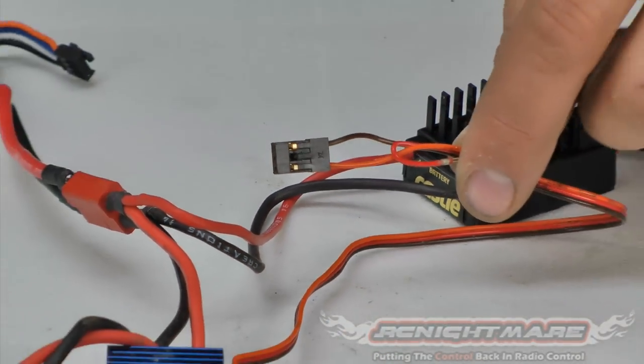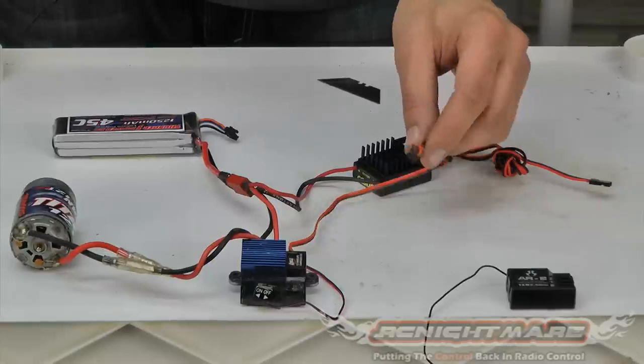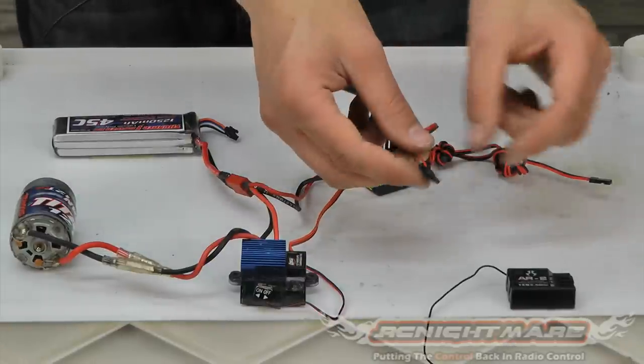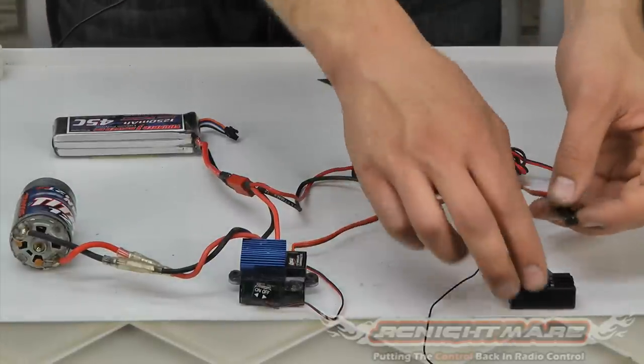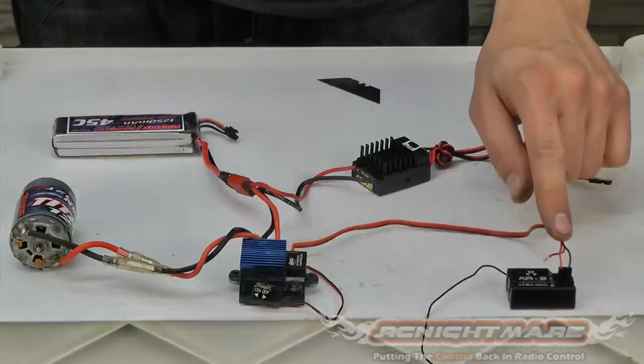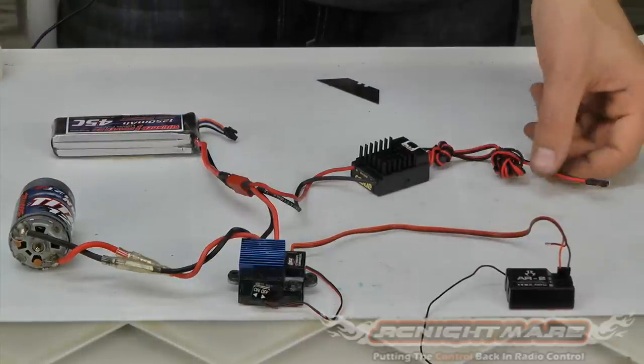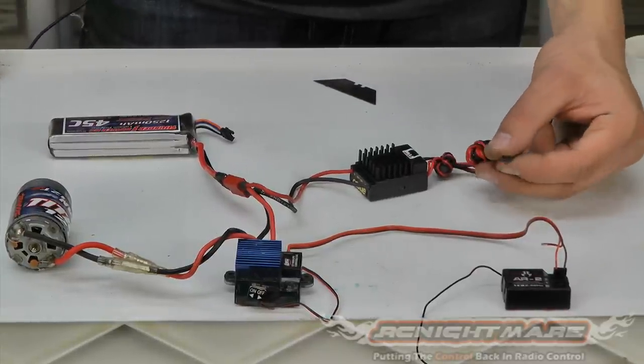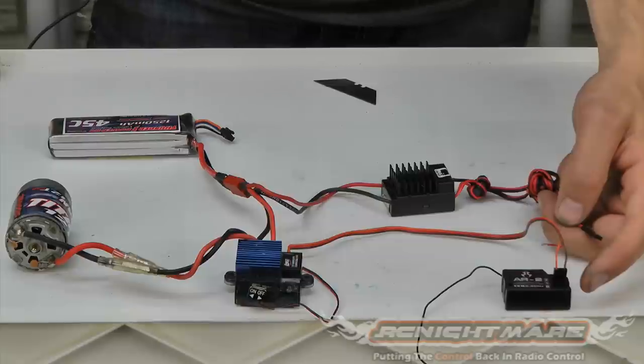Now you can put your ESC connector into the receiver like normal. In this case, it's channel two. One to turn, two to burn. So I have our speed controller plugged in, our signal wire going into it, and now the BEC output wire can go into any spare channel on your receiver.